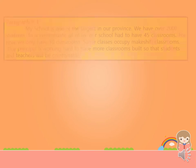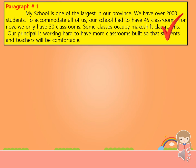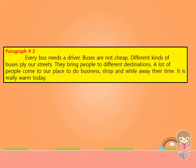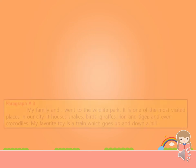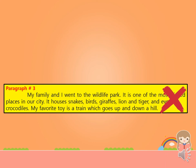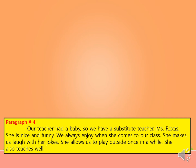Let's check your answers. For paragraph number one, if you wrote a check mark then you are right — paragraph number one focuses on a single idea, which is about my school. For paragraph number two, if you wrote an X, you are correct — paragraph number two does not focus on a single idea. For paragraph number three, if you wrote an X mark, good job — paragraph number three does not focus on a single idea. For paragraph number four, if you wrote a check mark, you are right — paragraph number four focuses on a single idea about our substitute teacher.